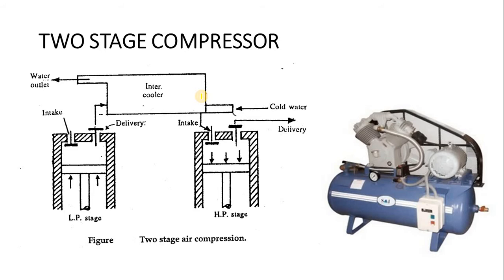Now, this is the two stage compressor. The two stage is most important because with the help of a single stage it is possible to raise the pressure, but simultaneously there are many limitations: the size of the compressor increases, a tremendous amount of heat is generated, lubrication fails, the lead seal gets damaged, and the performance of the compressor reduces. In order to avoid that, multistaging is the most important and best option.